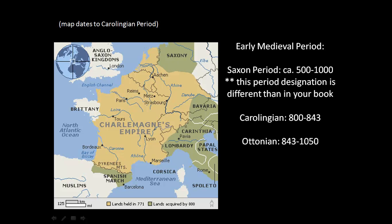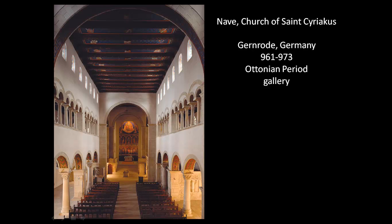Looking at this church interior, Ottonian architects followed their Carolingian predecessors in taking basilica structures and improving or adding to them. The key addition in the Ottonian period is the gallery. This is not the first time we see a gallery in architecture, but it's really when we start to see it regularly incorporated into the nave elevation — the walls on the side of the nave. Previously the nave elevation included the clerestory, the row of windows up top, and the arcade/colonnade. The gallery is the new addition.